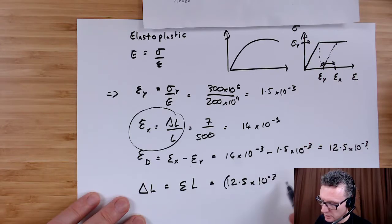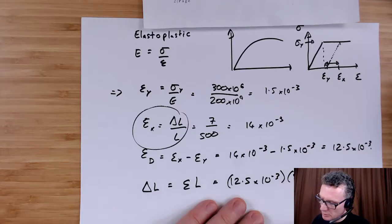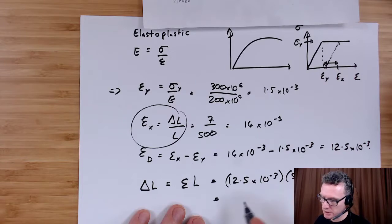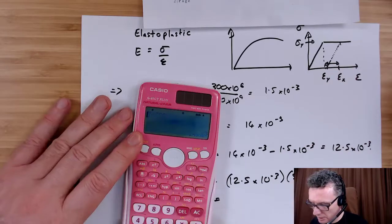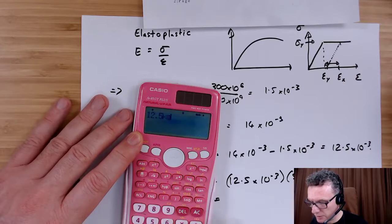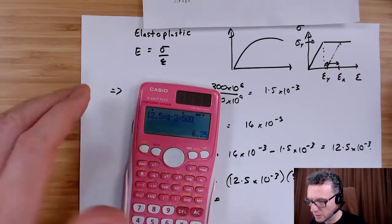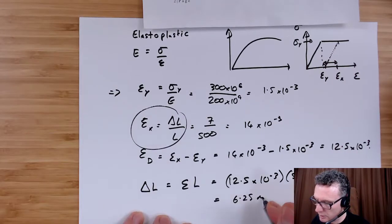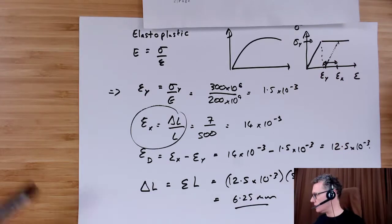So we've permanently shifted it by 12.5 times 10 to the minus 3. I could work in millimeters, put a 500 there, make sure I know that I'm working in millimeters. Multiply that through: 12.5 times 10 to the minus 3 times 500 equals 6.25 millimeters. Okay, so that's job done.